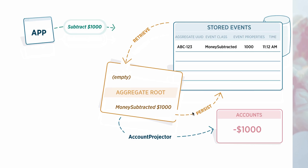When the aggregate root is persisted, newly recorded events get passed to the consuming classes. As we've seen, one type of consumer is a projector that can store the account for us.